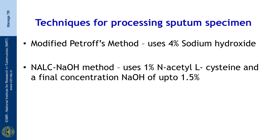We will first look at the techniques that are generally used for processing sputum specimen. One is the modified Petroff's method that uses 4 percent sodium hydroxide, and the other is the NALC-NaOH method that uses 1 percent NALC and NaOH at a final concentration of up to 1.5 percent.